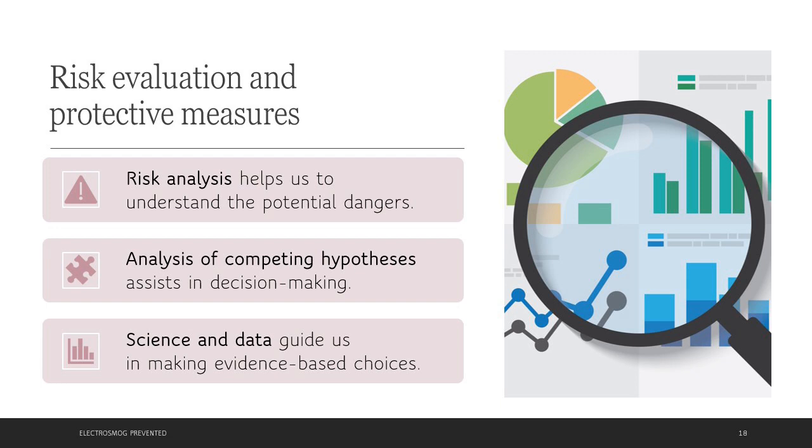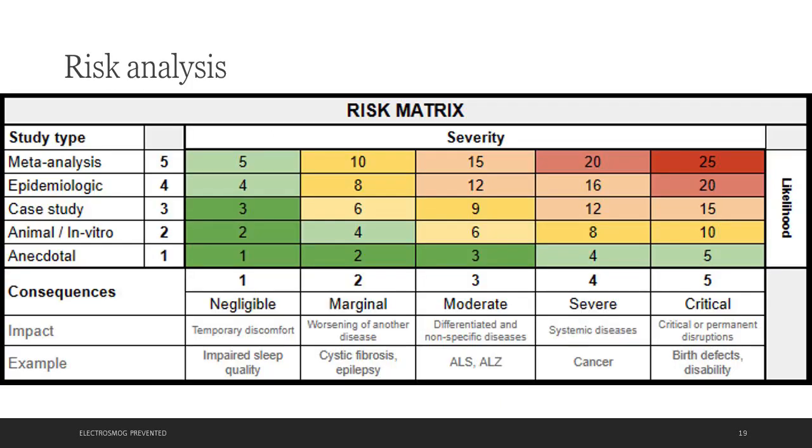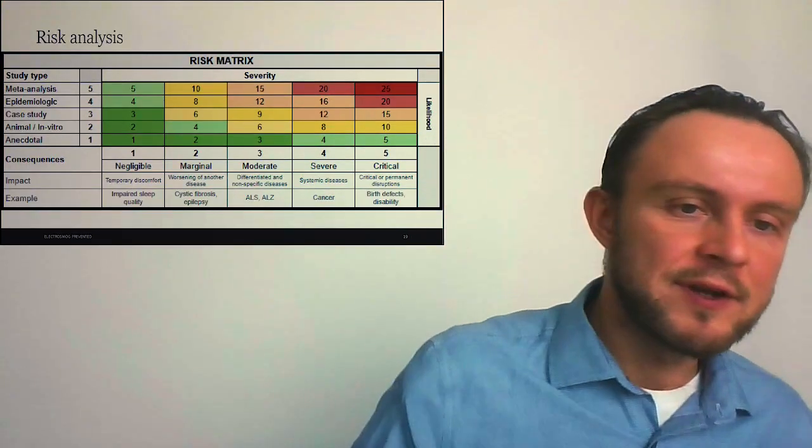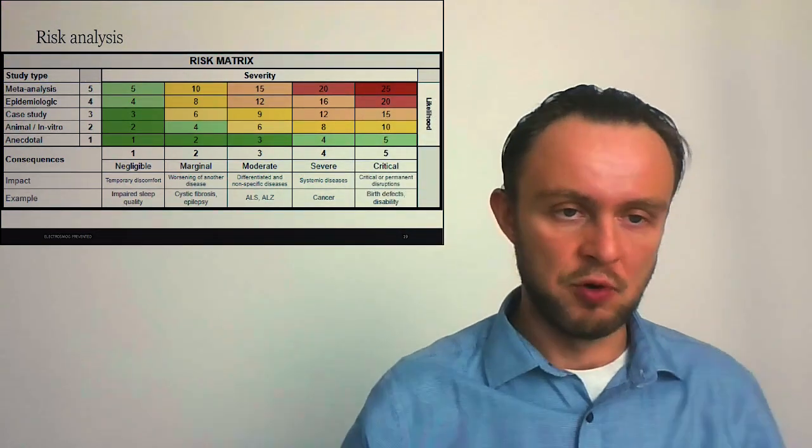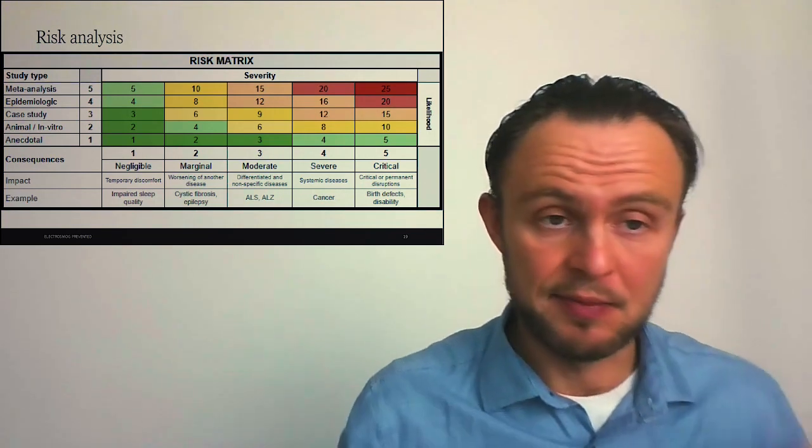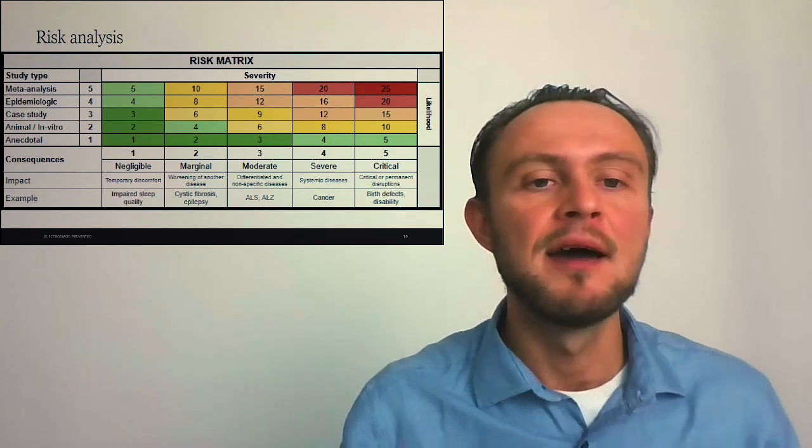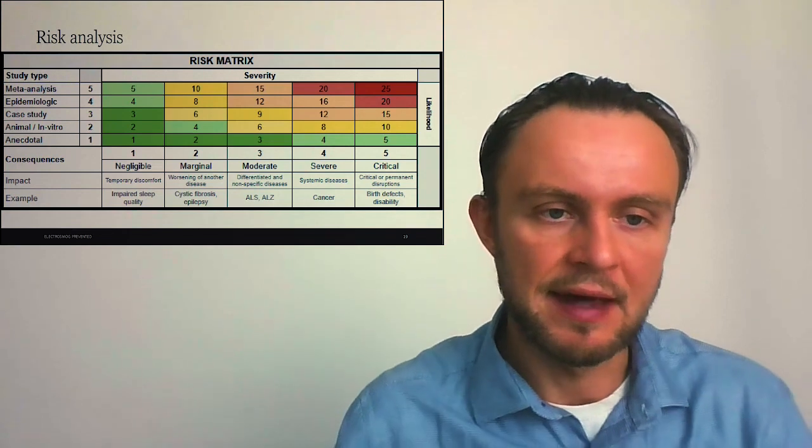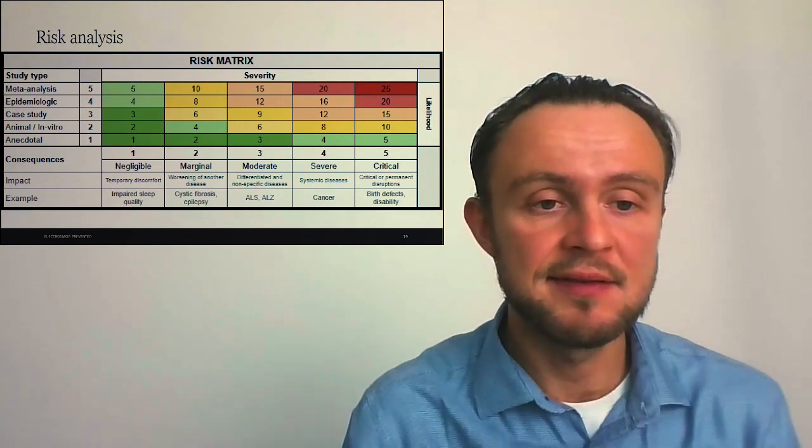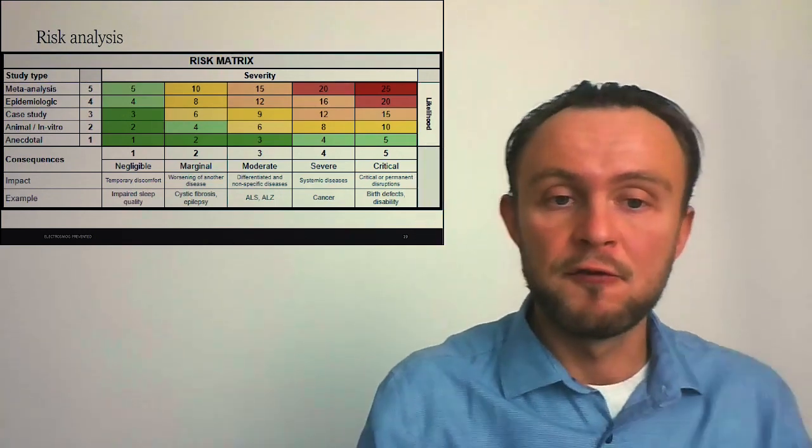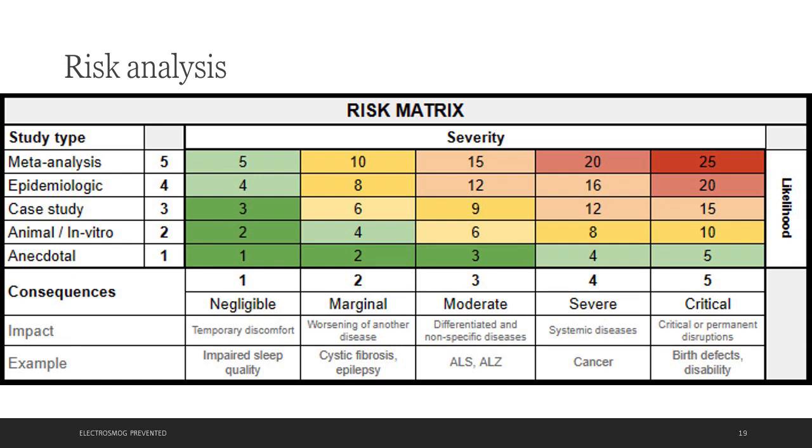Now we will use risk analysis, which is golden standard for evaluating risks and effective protection measures. Here we have a risk matrix with probability derived from quality of studies. Anecdotal studies, someone has said that something happened, has the least probability, whereas epidemiologic studies and meta-analysis of multiple studies have most probability assigned to them. On the horizontal axis, we can see consequences from negligible things like impaired sleep quality, up to very severe in case of systemic diseases like cancer or even birth defects.